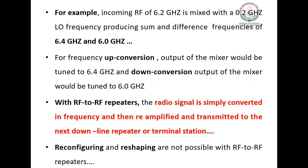As shown in the block diagram, for example, an incoming RF of 6.2 GHz is mixed with a 0.2 GHz local oscillator frequency, producing sum and difference frequencies of 6.4 GHz and 6.0 GHz. For frequency up conversion, the output of the mixer would be tuned to 6.4 GHz, and for down conversion, the output would be tuned to 6.0 GHz.